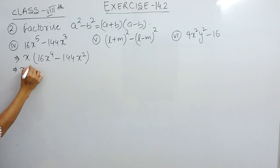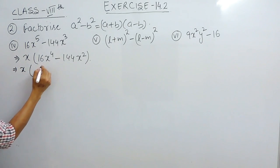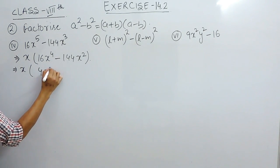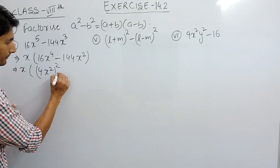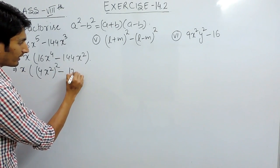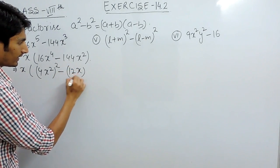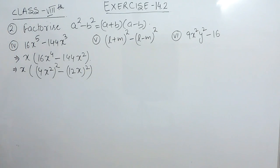Now we can convert this: 16 is basically 4², and this can be written as a whole square. So this is (4x²)² because if there is a power raised to power, the powers get multiplied. So (x²)² becomes x⁴, and minus, this is (12)² and x whole square.